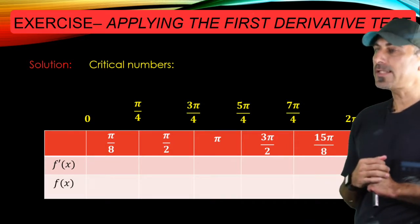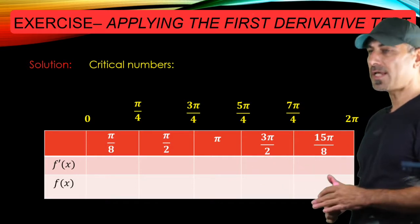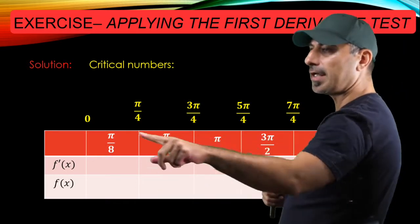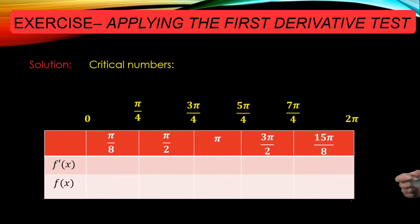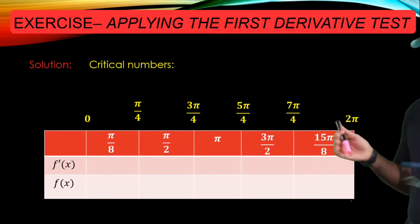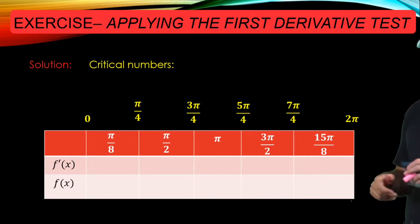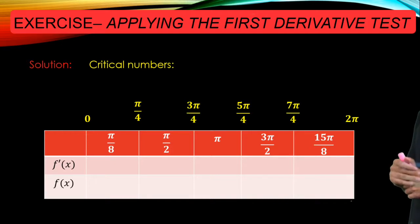So the next thing is to choose your sample points from each sub-interval. So I got pi over 8, pi over 2, pi, 3 pi over 2, and 15 pi over 8. And again, you can choose some other sample points as long as they belong to those sub-intervals. And in the next step, you check the sign of f prime at those sample points.